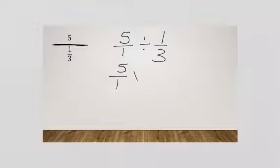Now let's look at this next one. Notice here is our fraction bar. It's 5 divided by 1 third. So we can write that as 5 over 1 divided by 1 third, which becomes 5 over 1 times the reciprocal, which is 3 over 1. 5 times 3 is 15. 15 over 1 is 15.